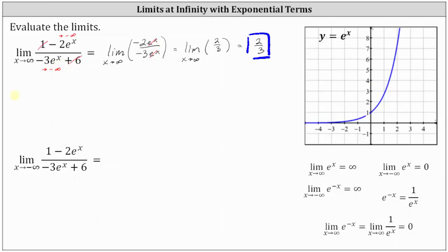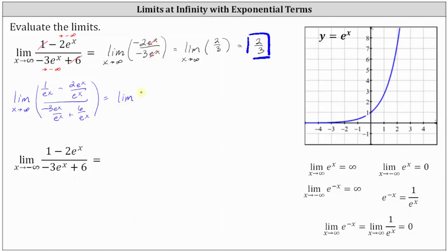So let's also show this method. We would have the limit of one divided by e to the x, minus two e to the x divided by e to the x, all divided by negative three e to the x divided by e to the x, plus six divided by e to the x, as x approaches infinity. Now we simplify: one divided by e to the x doesn't simplify, minus two e to the x divided by e to the x is just two, divided by negative three e to the x divided by e to the x is negative three, and then we have plus six divided by e to the x.